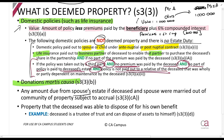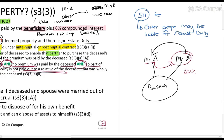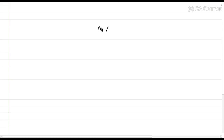Another deemed property is any amount due from the spouse's estate if the deceased and spouse were married out of community of property subject to accrual. For example, Mr. A and Mr. B are married out of community of property subject to accrual.